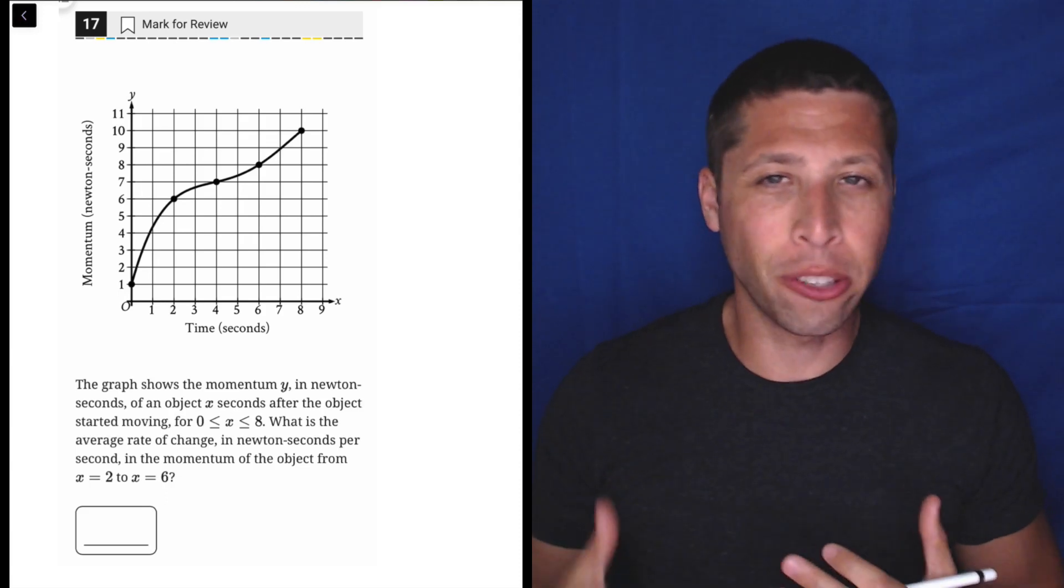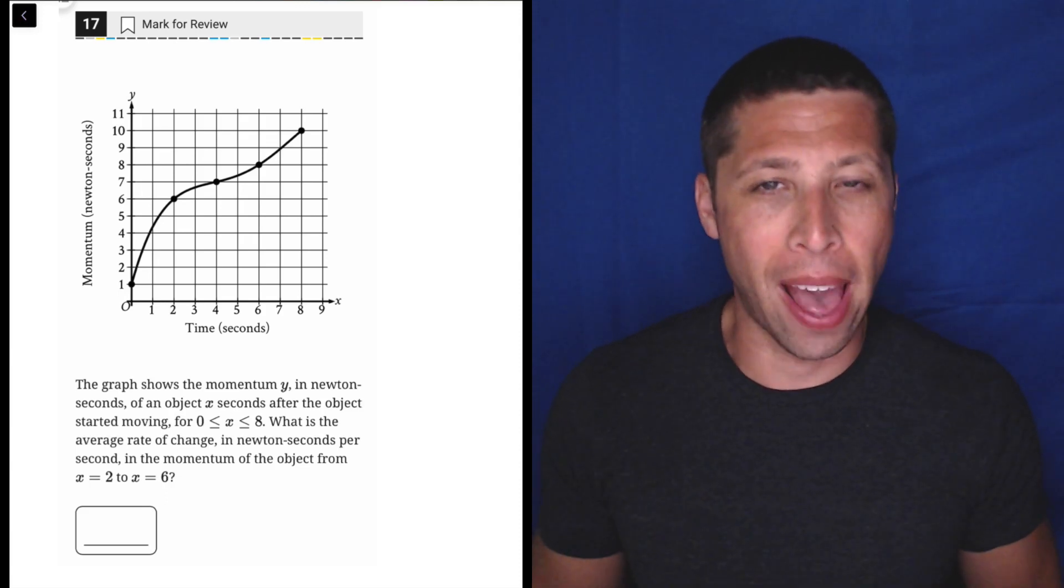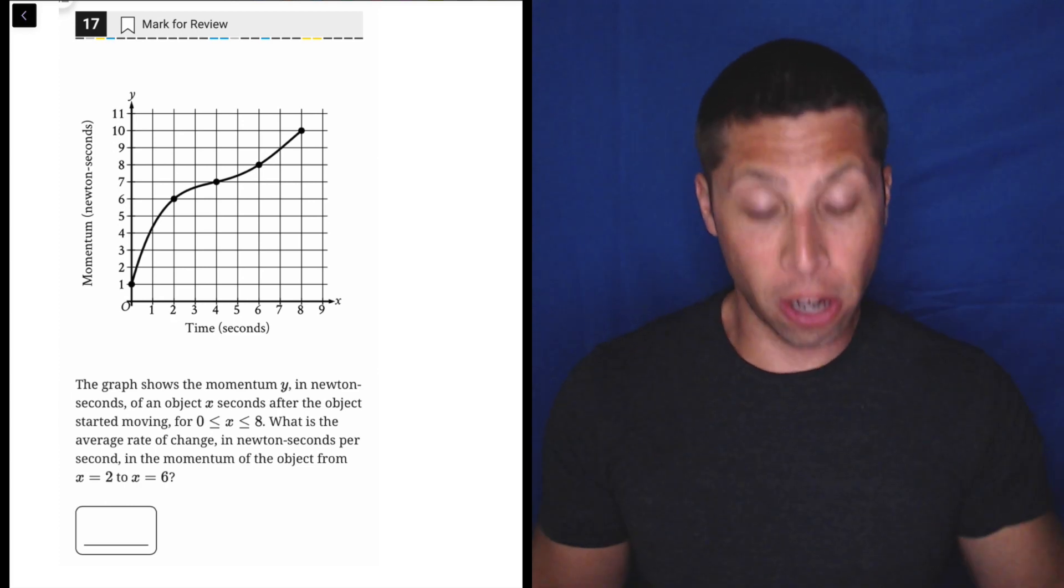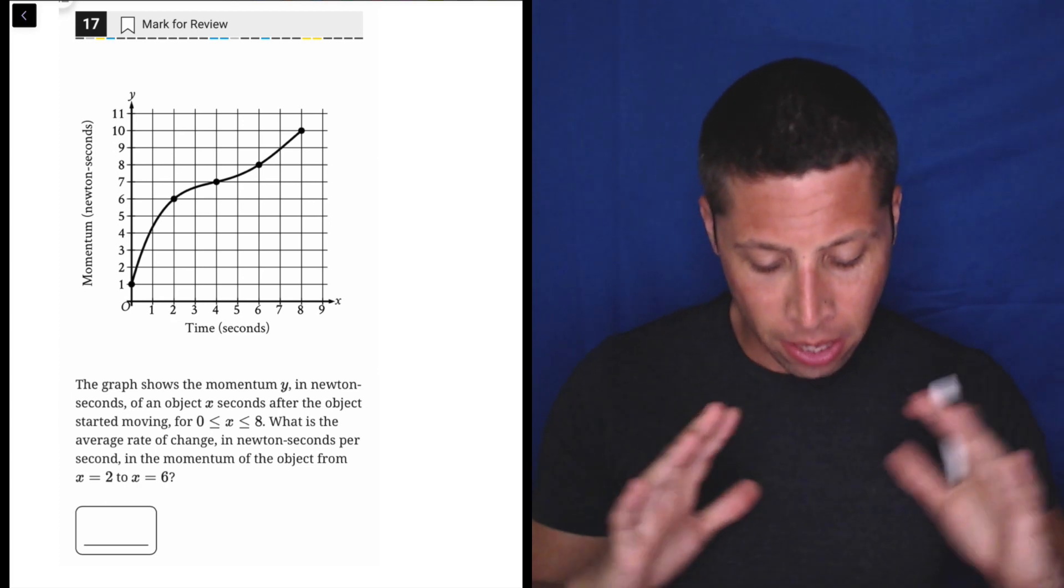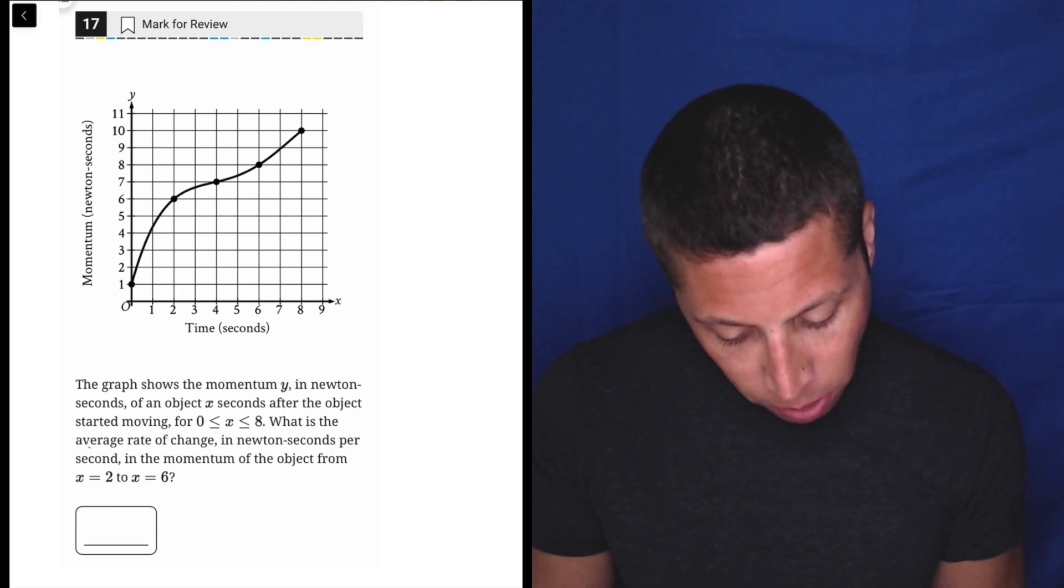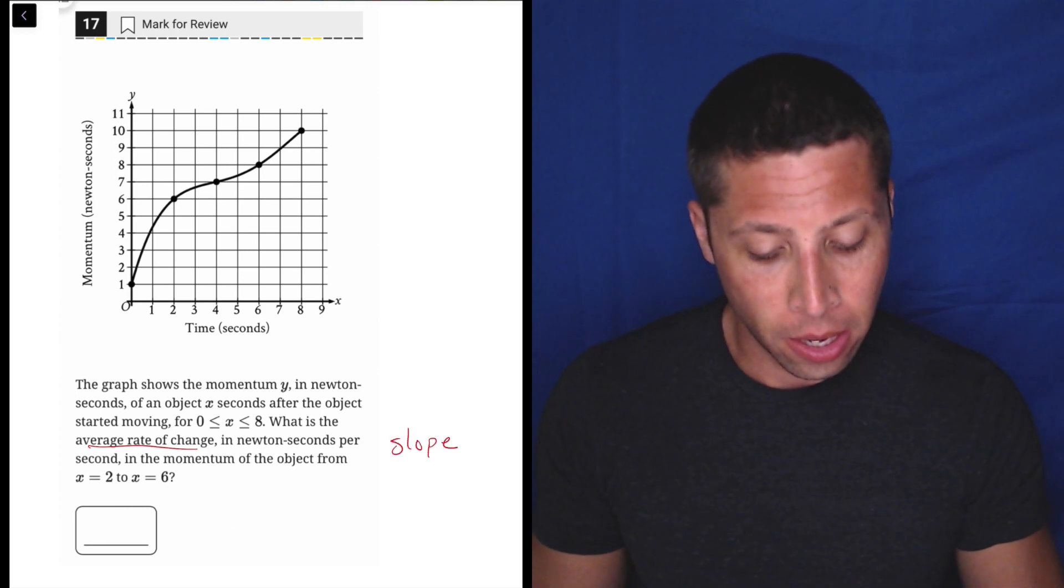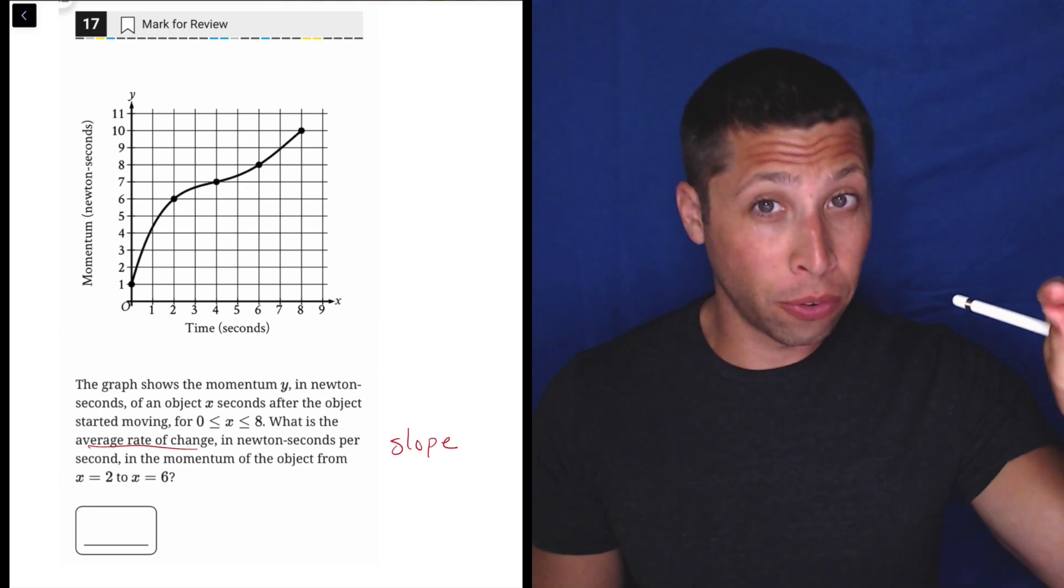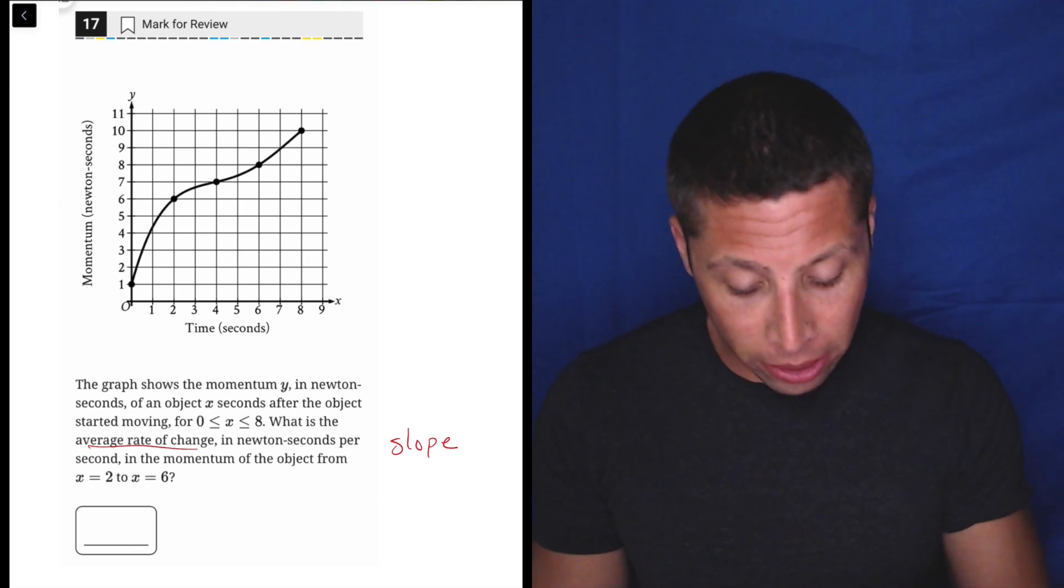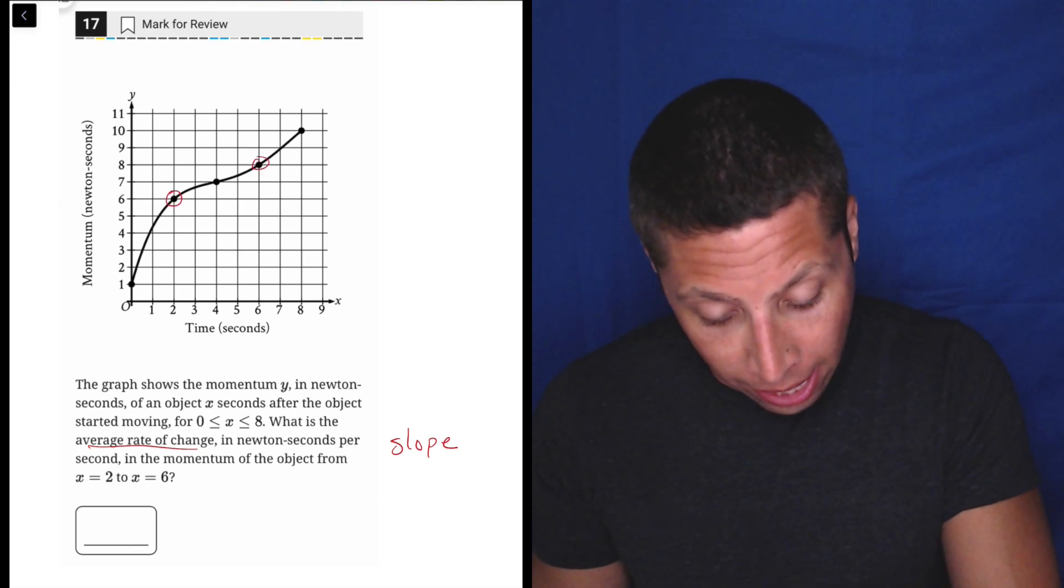This is another case where the story is way more confusing than the math. We've got this weird curve and this story about momentum, but when they say what is the average rate of change, that's just code for slope.